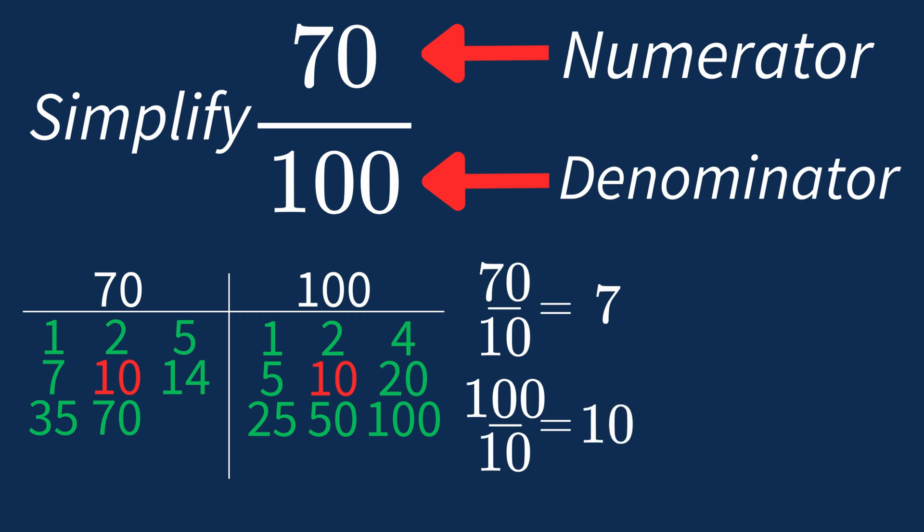So after dividing, the simplified fraction is 7 over 10. And we know that 7 over 10 is in its simplest form, because the only common factor between 7 and 10 is 1. And when 1 is the largest common factor, we know that fraction is already in its simplest form.